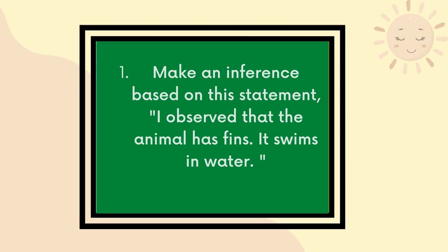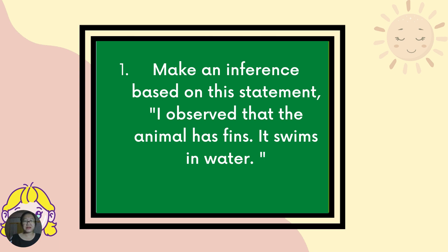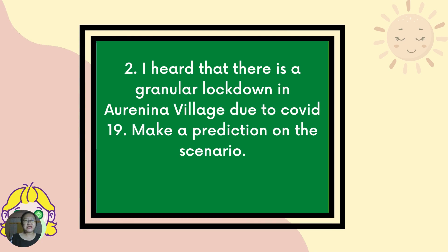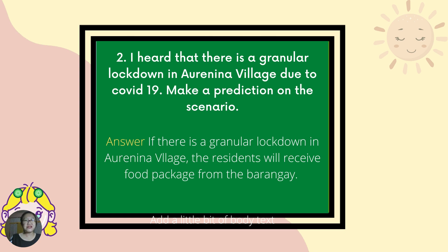Activity time. Number one: make an inference based on this statement — I observed the animal has fins and it swims in water. What is your inference? You can infer that the animal is a fish, because fish have fins and they swim in water. Number two: I heard that there is a granular lockdown in Aurinino Village due to COVID-19. Make a prediction. We can predict that if there is a granular lockdown in Aurinino Village, the residents will receive a food package from the Barangay. This is just one possible prediction — you can make another prediction from this observation.